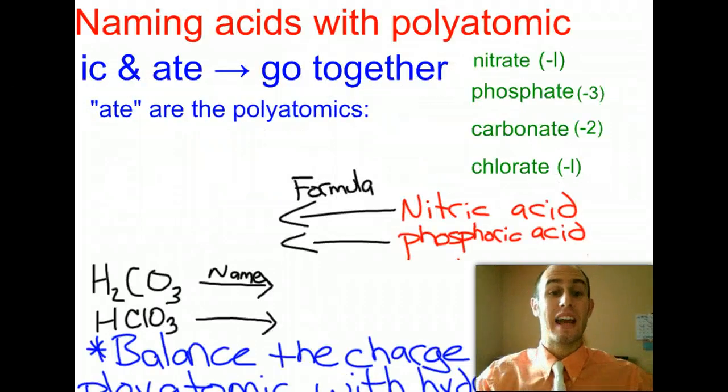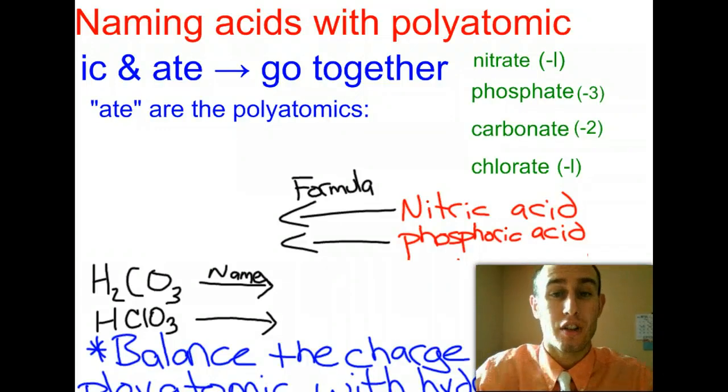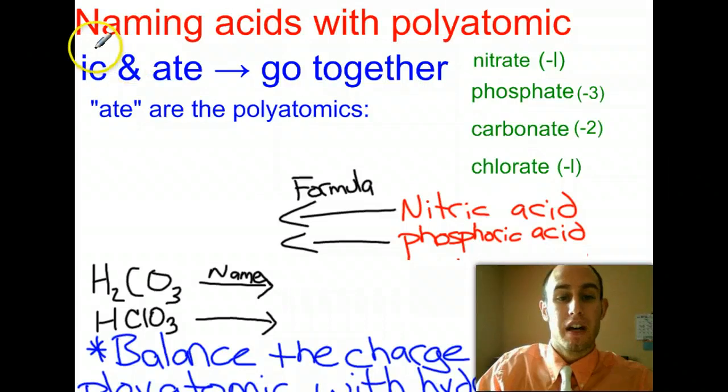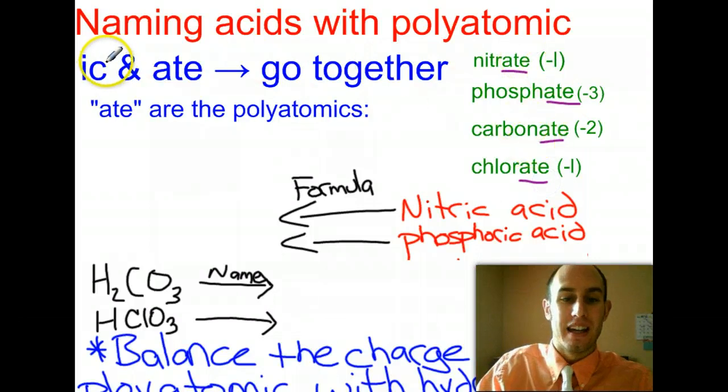Let's look at some examples here for naming oxyacids. Basically, we're going to take those steps that you just wrote down and apply those. Remember, -ic and -ate go together. -ate are the polyatomics: nitrate, phosphate, carbonate, chlorate. The -ic makes it an acid, so you always have to have -ic and -ate go together.